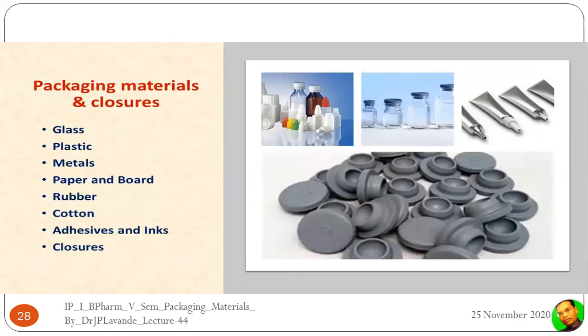After containers, we move to packaging materials and closure systems. The different kinds of materials used as packaging include glass, plastic, metal, paper and boards, rubber, cotton, adhesive inks, and closures. Glass, plastics, and metals are most commonly used in primary packaging. Rubber also forms part of primary packaging, while cotton, adhesive inks, and paperboard form part of secondary and tertiary packaging materials.